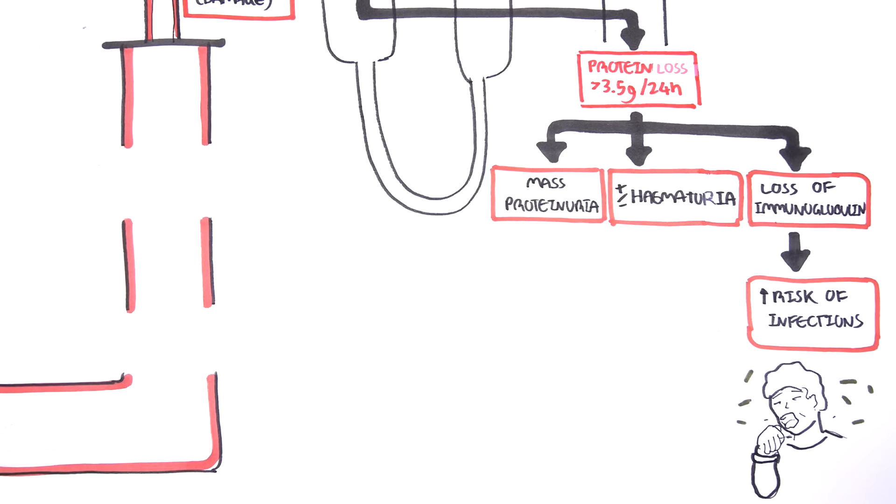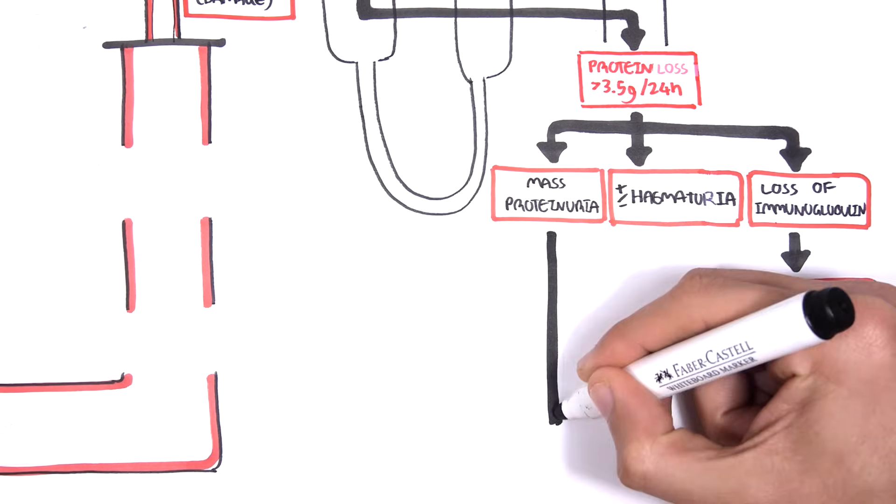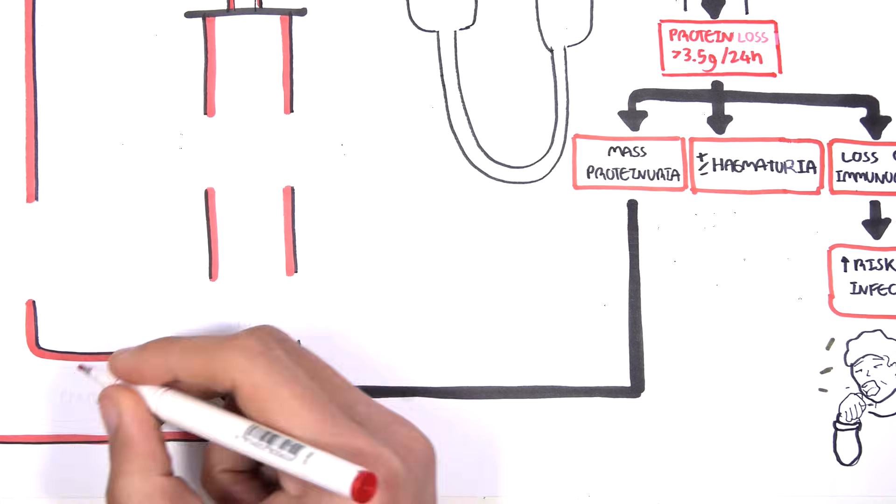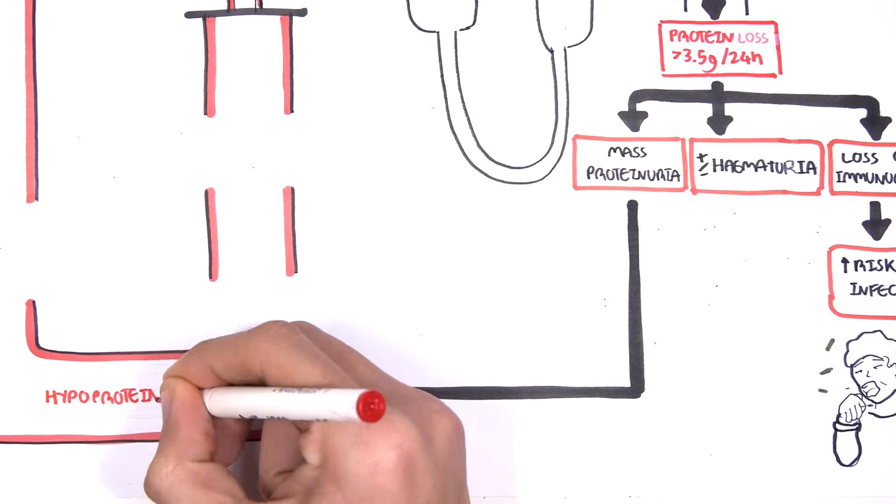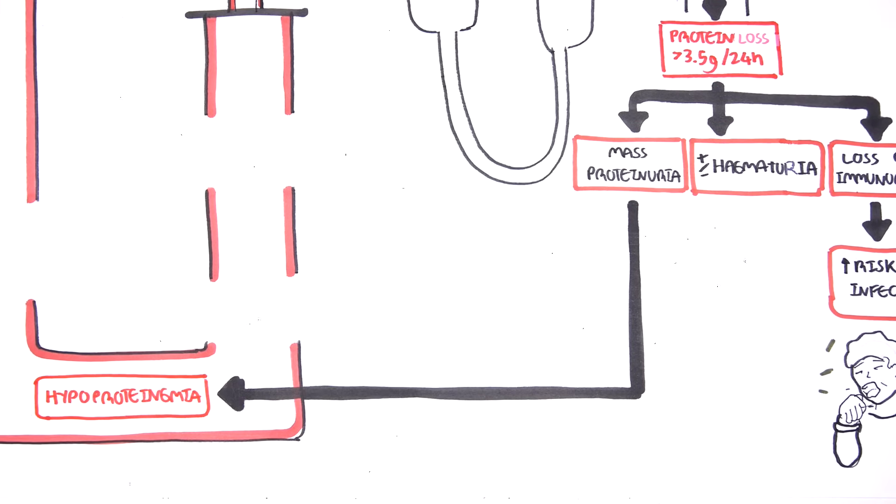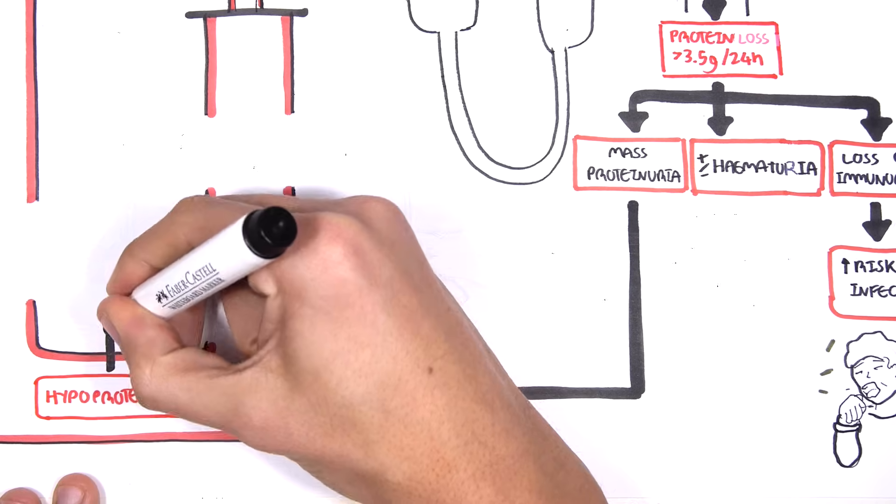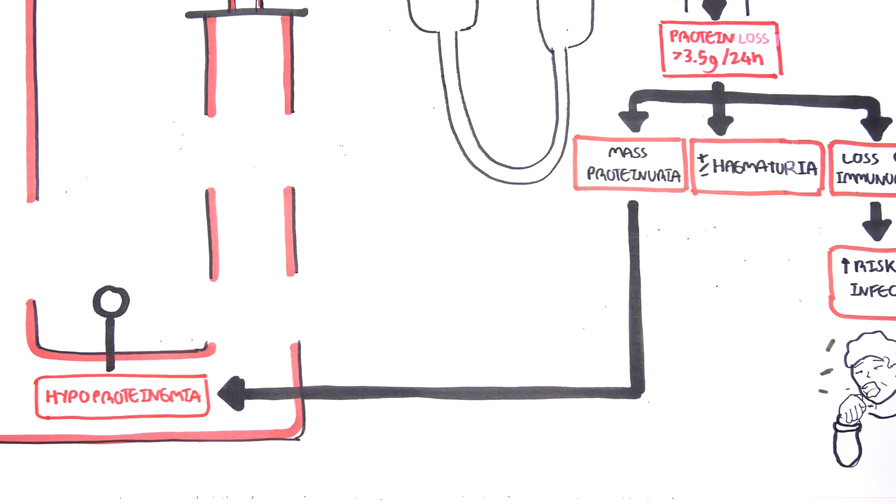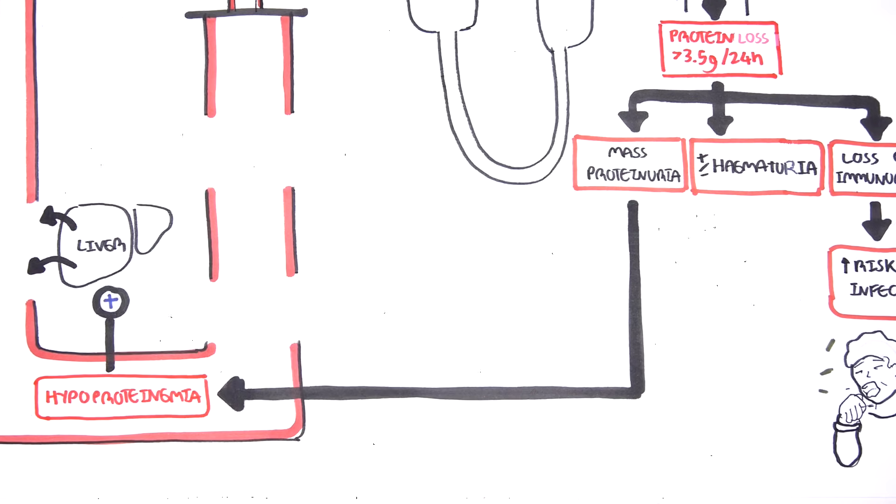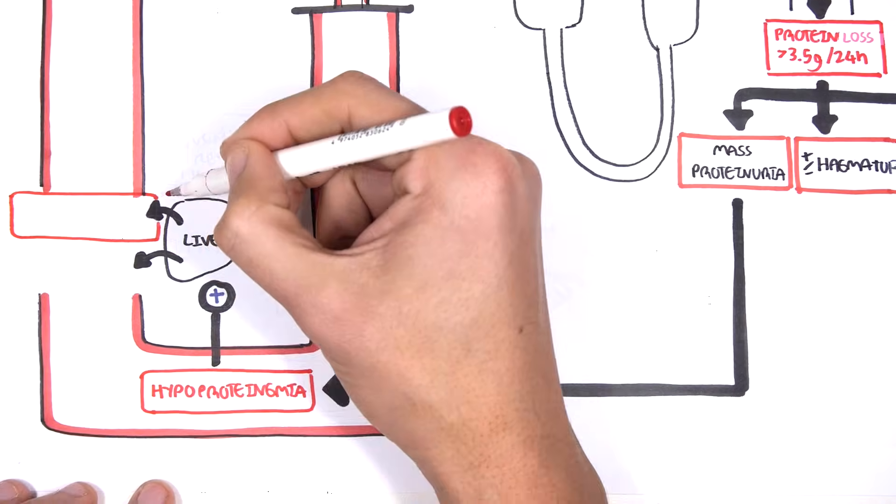The massive loss of protein, such as albumin, from the circulation results in hypoproteinemia, more specifically hypoalbuminemia. This tells the liver to produce more proteins to compensate.